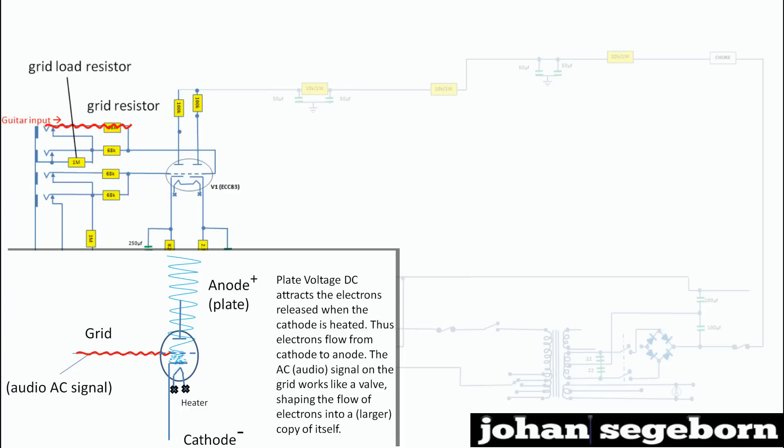And what you do is you heat the cathode so it emits electrons. And you make sure that the anode is charged positively relative to the cathode. So the electrons flow from cathode to anode. And between cathode and anode, you place a grid. And this grid works as a valve, basically.